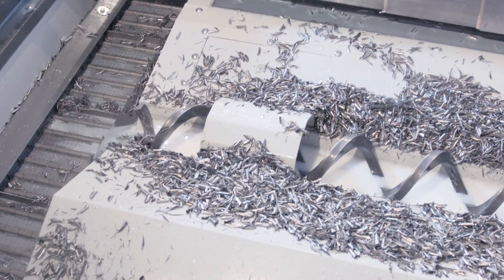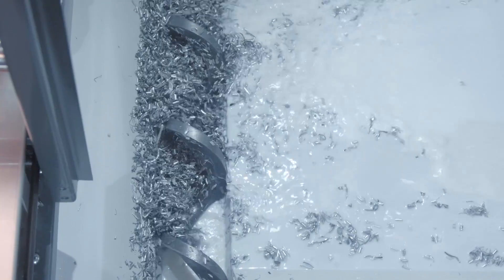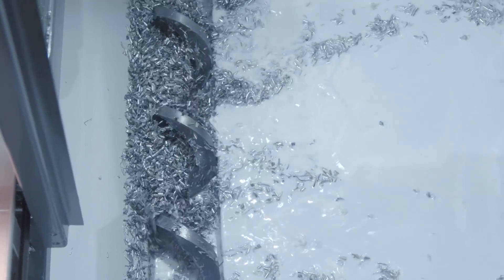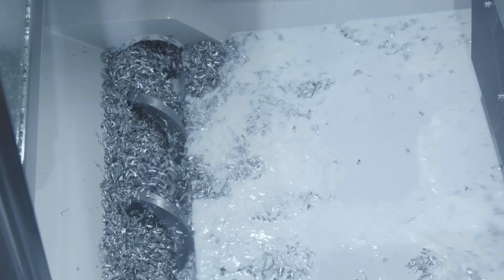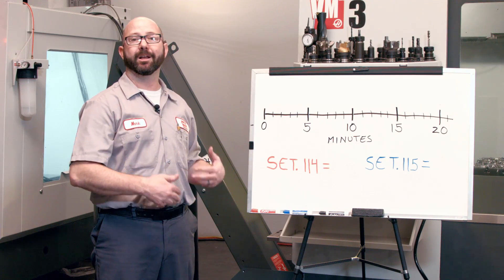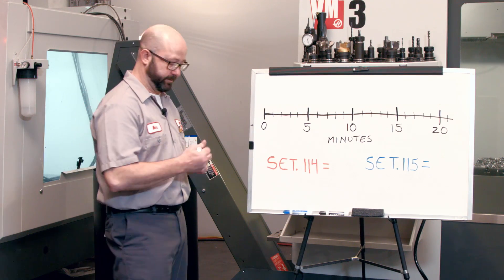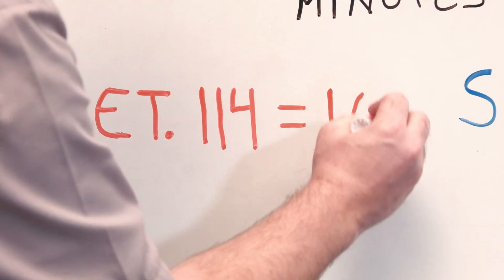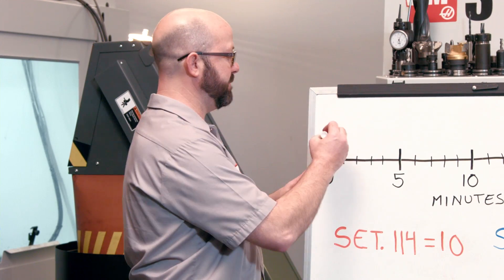We want to run our chip conveyor or our chip auger intermittently throughout the day instead of all at once. And the control, the Haas control, can do this for us automatically with settings 114 and 115. Setting 114 is our conveyor cycle time in minutes. If I set this to a 10, then our conveyor is going to kick on once every 10 minutes.